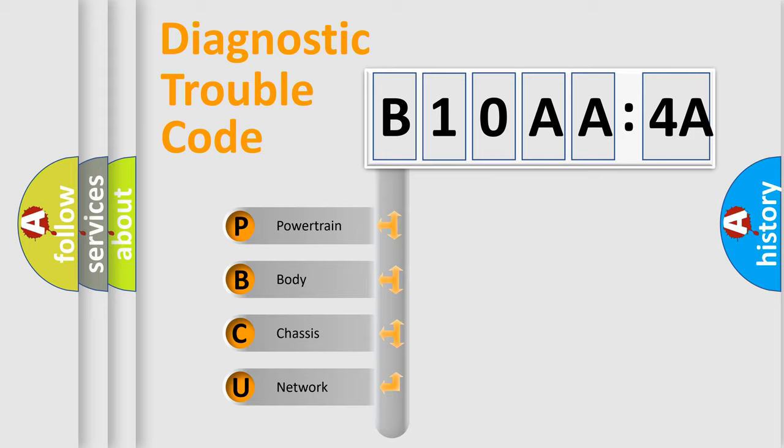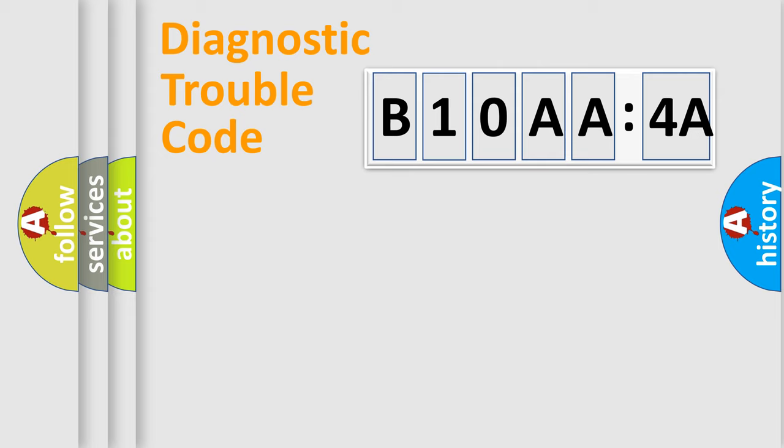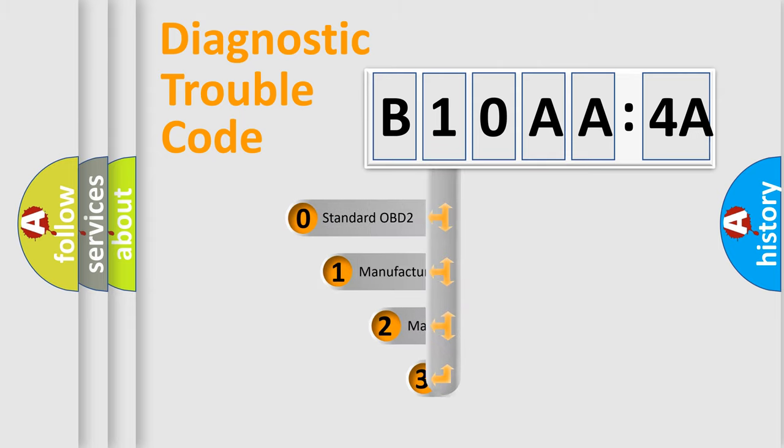We divide the electric system of automobile into four basic units: Powertrain, Body, Chassis, Network. This distribution is defined in the first character code.